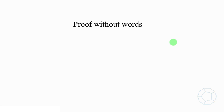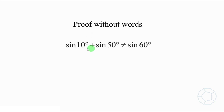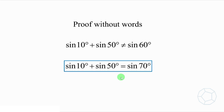Hello everyone, welcome to my channel Mathusiasm. Today I want to show you a proof of a trigonometric identity without any written steps. We all know that sin 10 degrees plus sin 50 degrees is not equal to sin 60 degrees. However, how do we know that it is equal to sin 70 degrees?